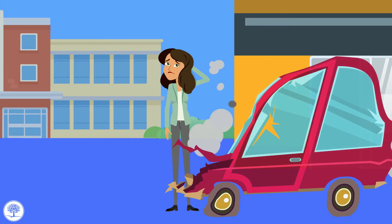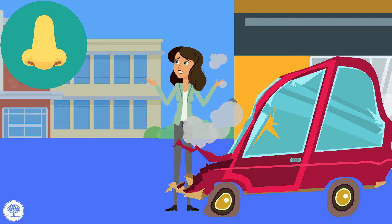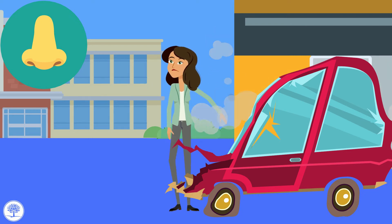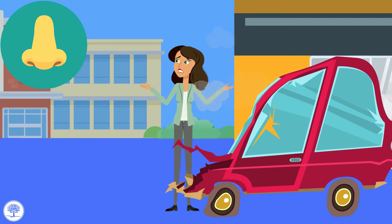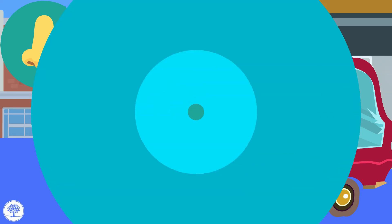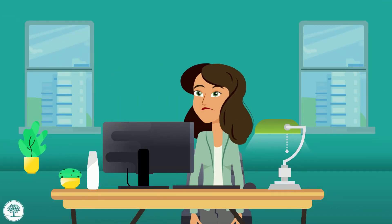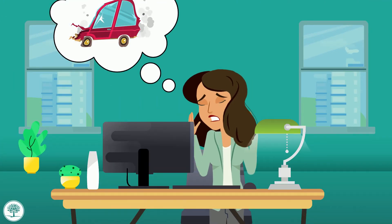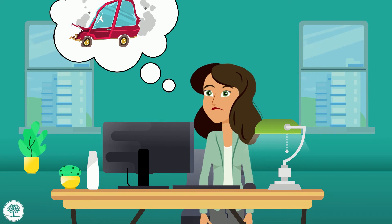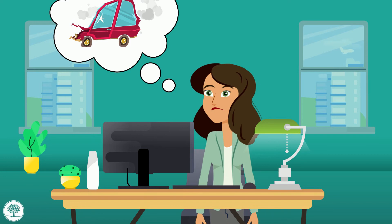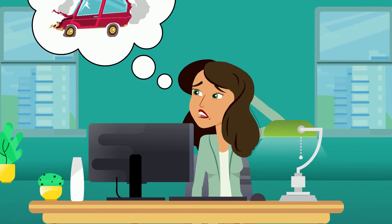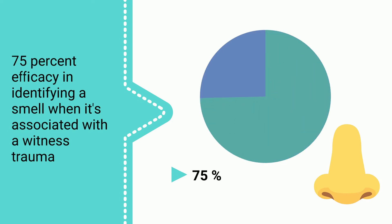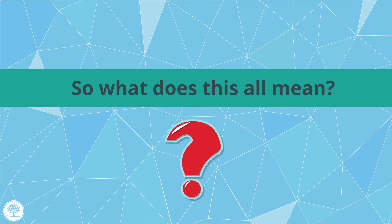We also have strong reactions to smells associated with trauma. The amygdala and the olfactory cortex are very close to each other, and when the amygdala is activated for emotional memories, that taps into our sense of smell. Studies show there is a 75% efficacy in identifying a smell when it is associated with a witnessed trauma.